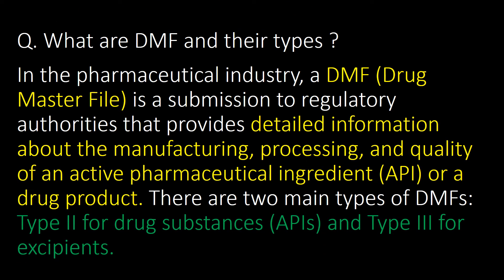What are DMFs and their types in the pharmaceutical industry? A DMF, or Drug Master File, is a submission to regulatory authorities that provides detailed information about the manufacturing, processing, and quality of an active pharmaceutical ingredient (API) or a drug product. There are mainly two types: Type 2 for drug substance applications, that is API, and Type 3 for excipients.